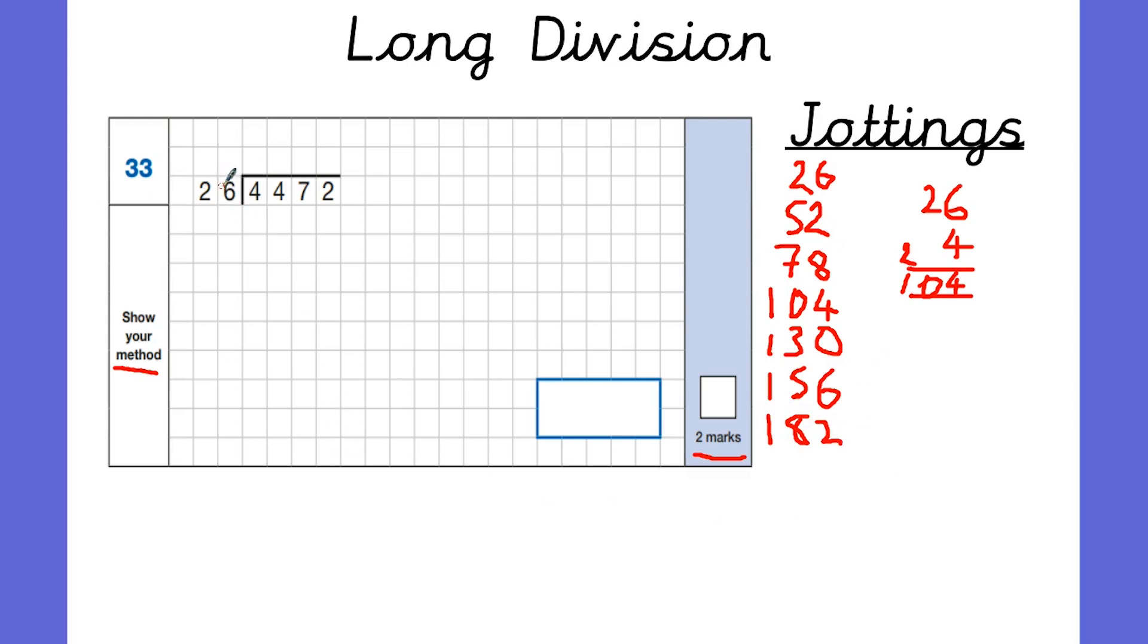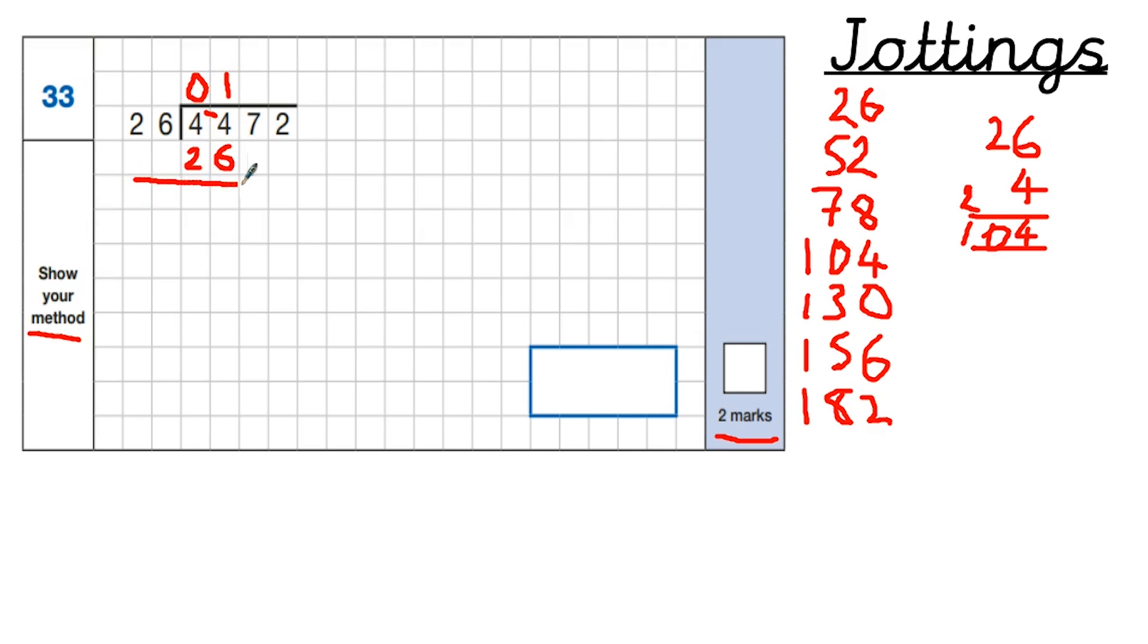So first of all we say 26, how many times is 26 going to 4? Well we can't do that. So we're going to do a little line here. How many times does 26 go into 44? Well if I look on my jottings it doesn't go in twice because that's too big. So it's only going to go in once. So I'm going to put a 0 here because it doesn't go into 4. It's going in once and I'm going to put the 26 here underneath. Because it's gone into 44 once but we want to know what's left over. So we subtract, 4 take away 6 we can't do. So we're going to borrow. That becomes 3, that becomes 14. 14 take away 6 is going to be 8. And then 3 take away 2 is going to be 1.